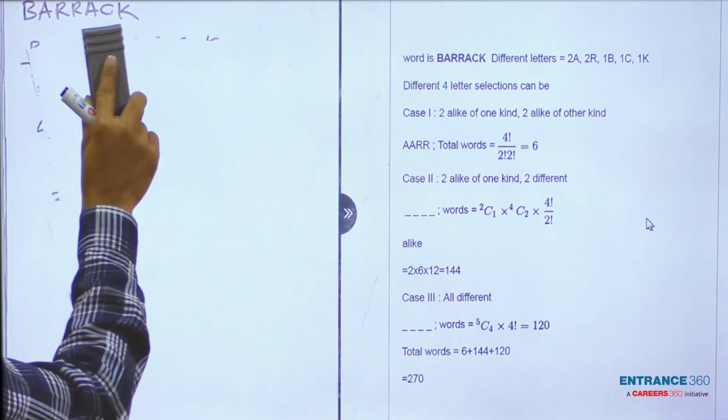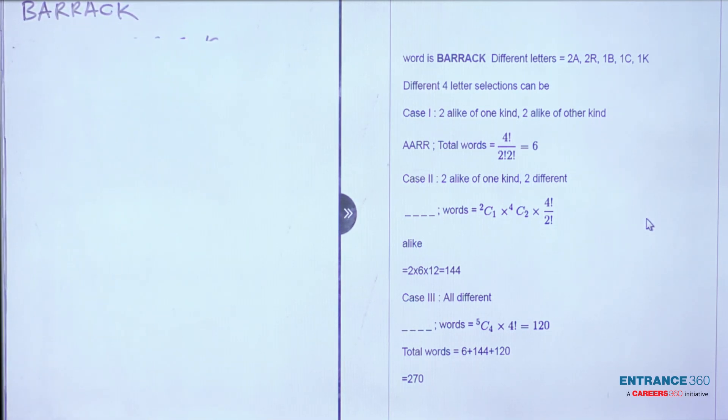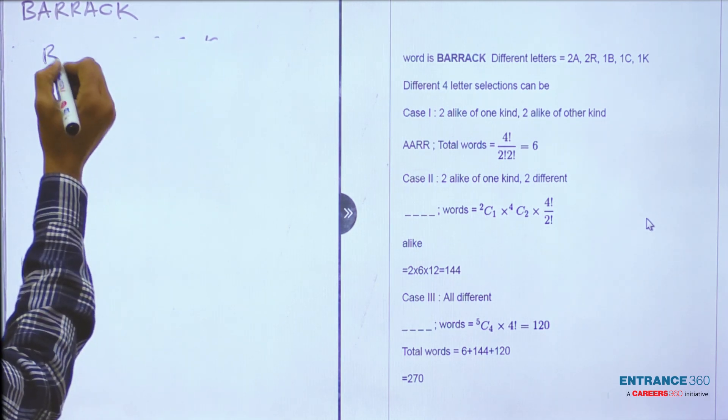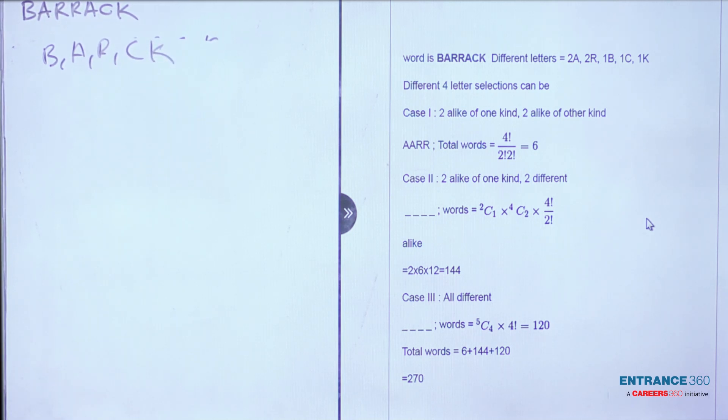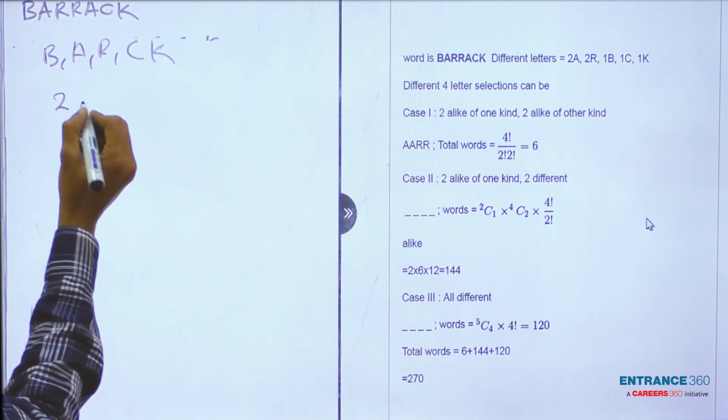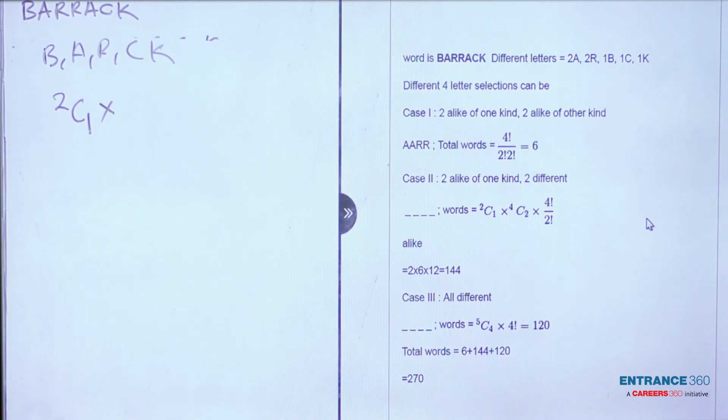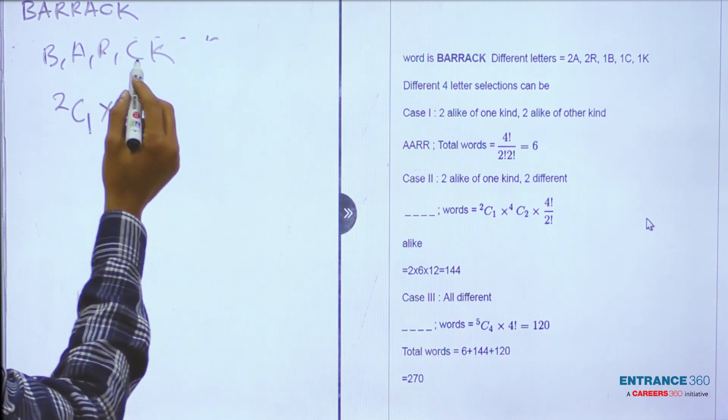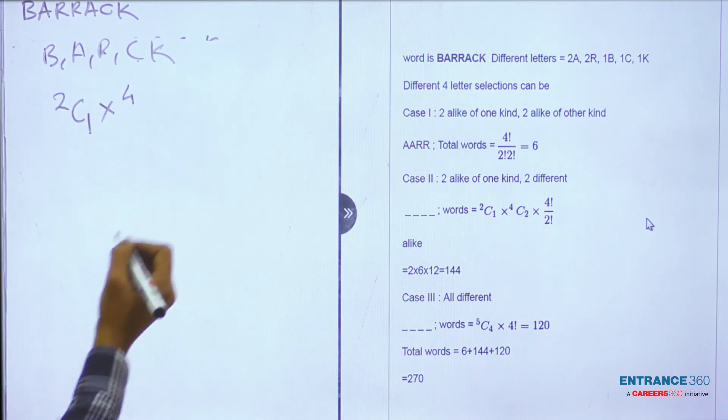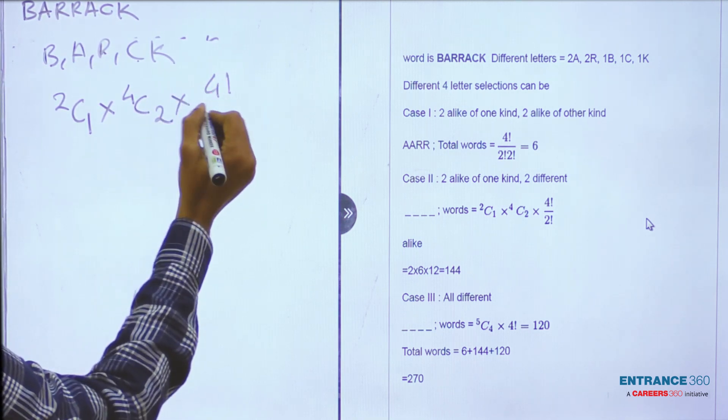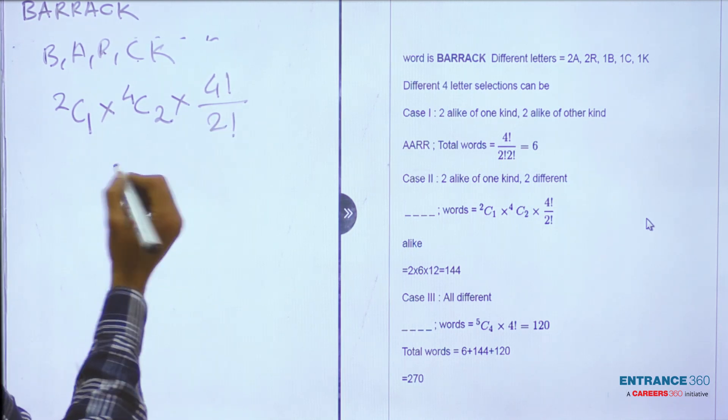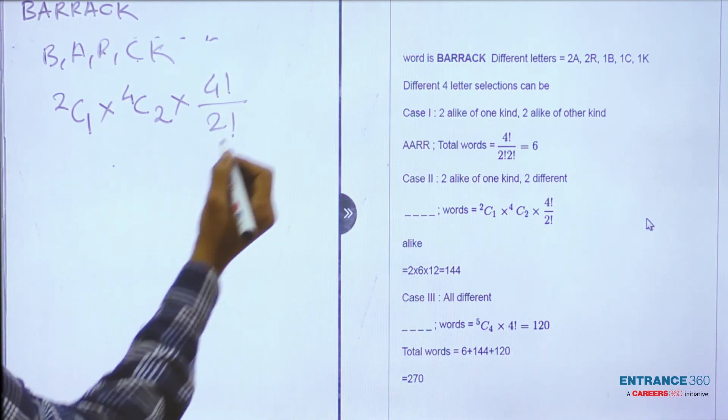Second case is when two are alike of one kind and two are of different kinds. The different letters are B, A, R, C, K. Two of one kind can be selected in 2C1 ways. Then two different letters are selected from the four remaining letters in 4C2 ways. And this can be arranged in 4! divided by 2!. So all this you will get 144.